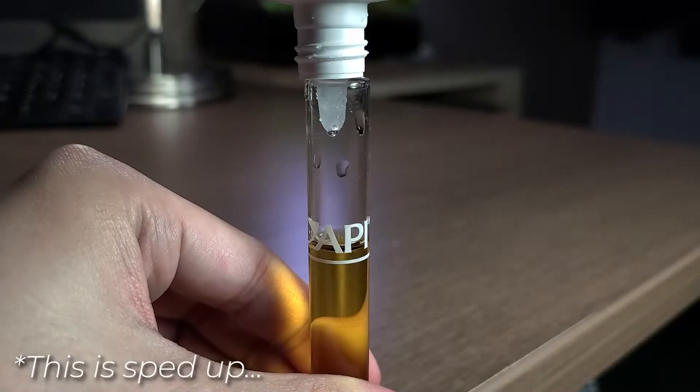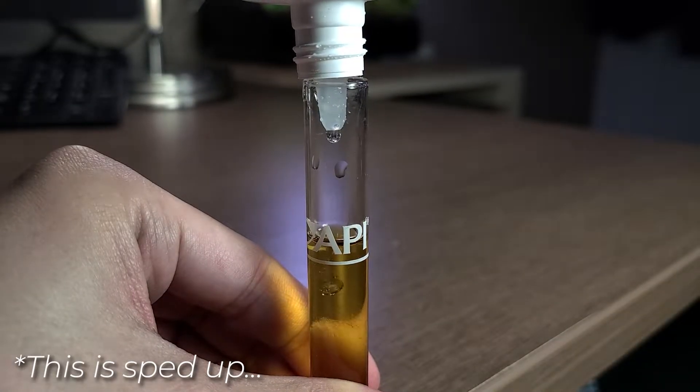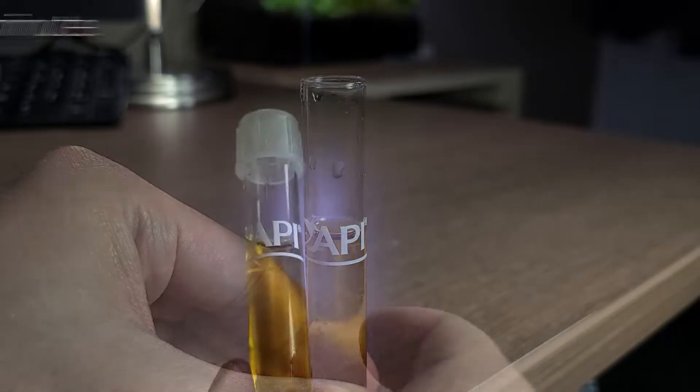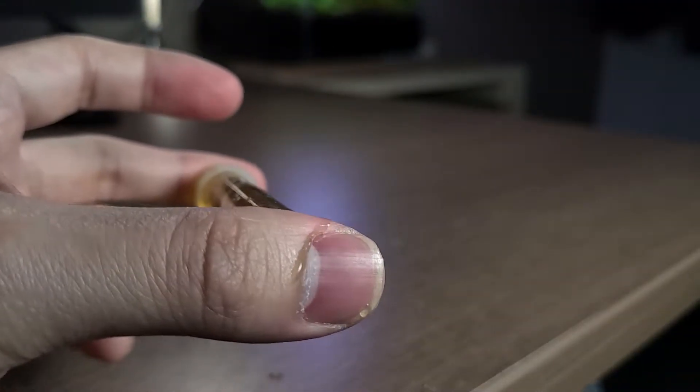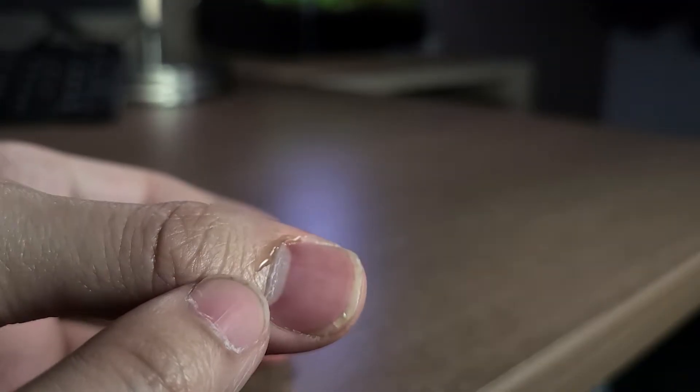Now that's done, we can add 10 drops of bottle number two to the test tube. We then need to shake it for one minute. Again, this part is also very important to ensure an accurate test result.